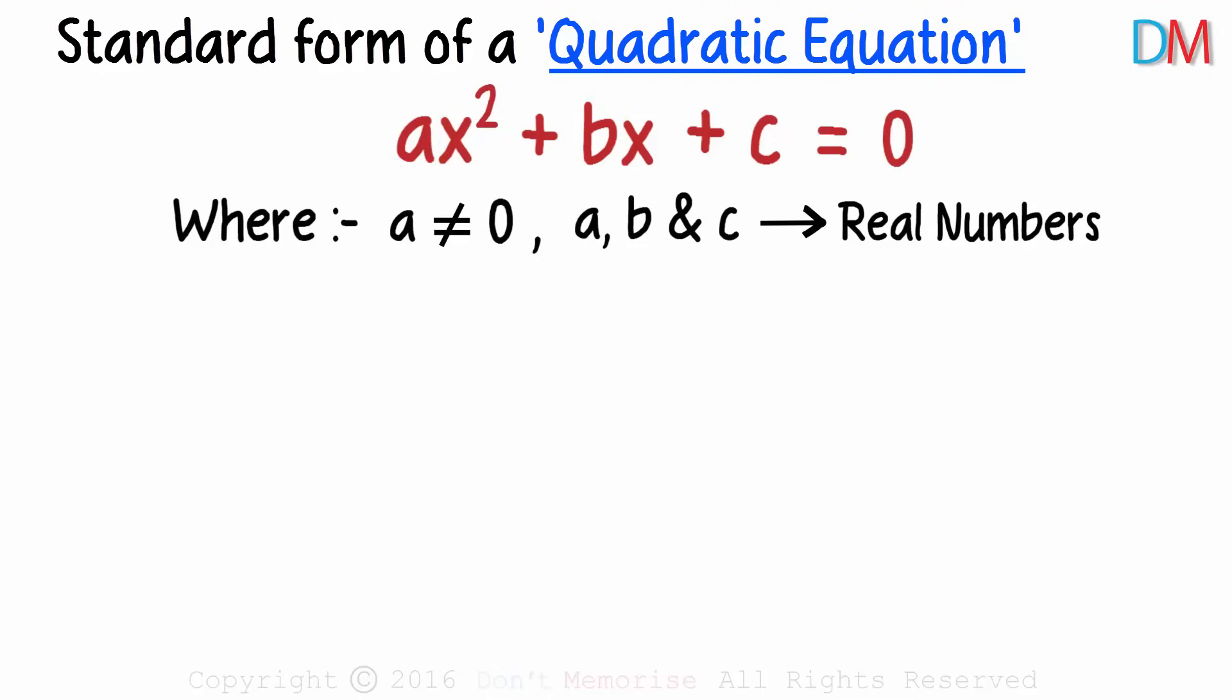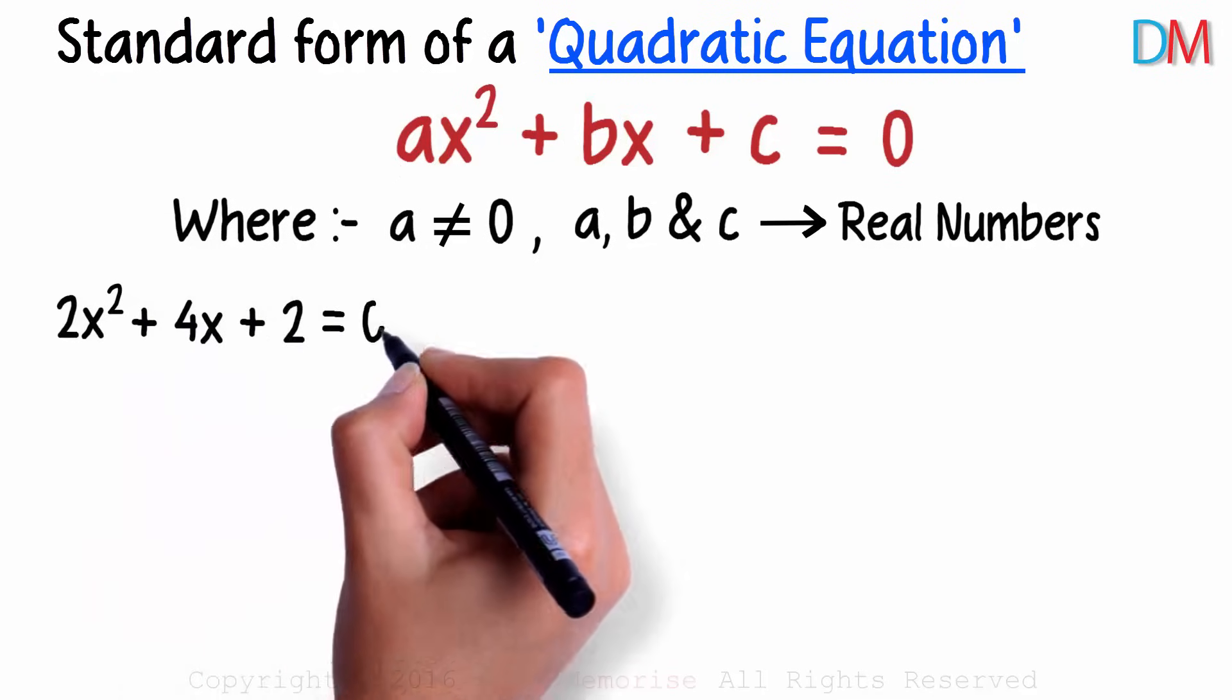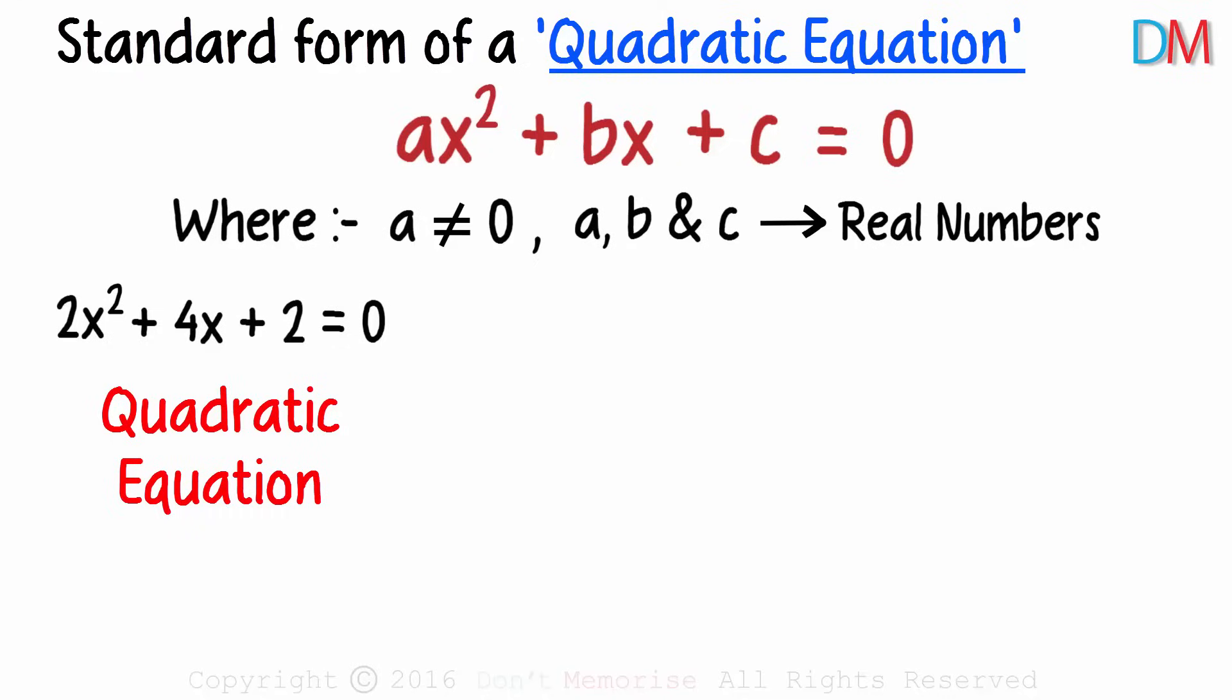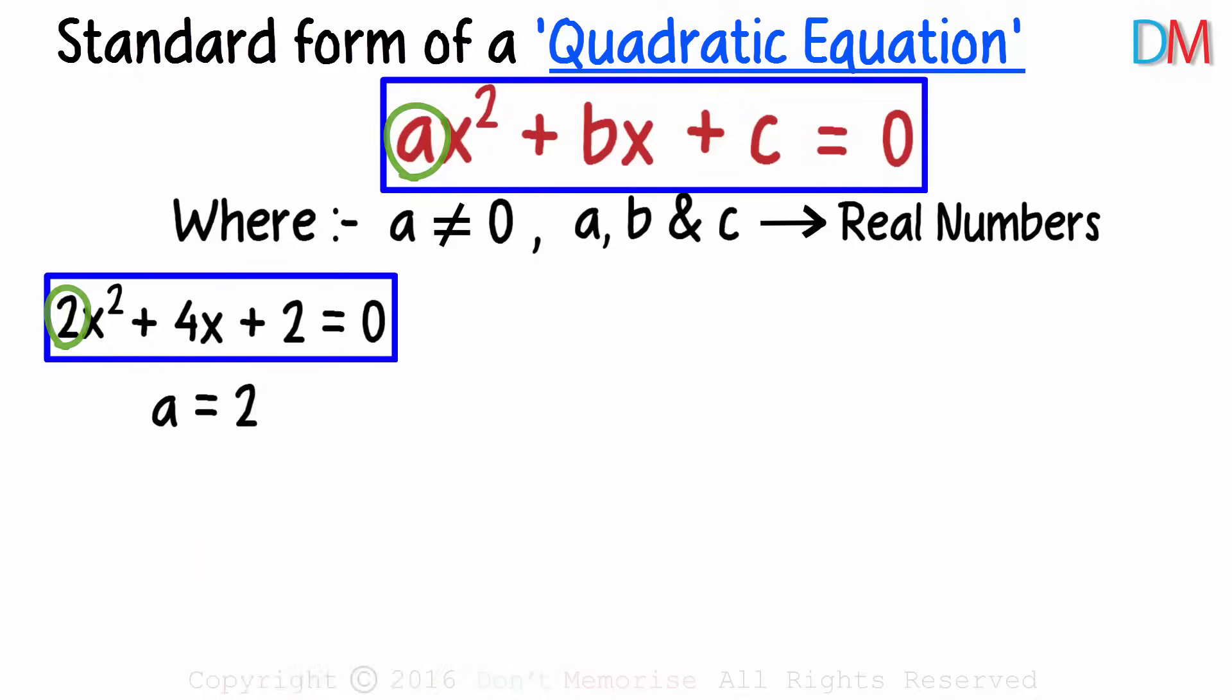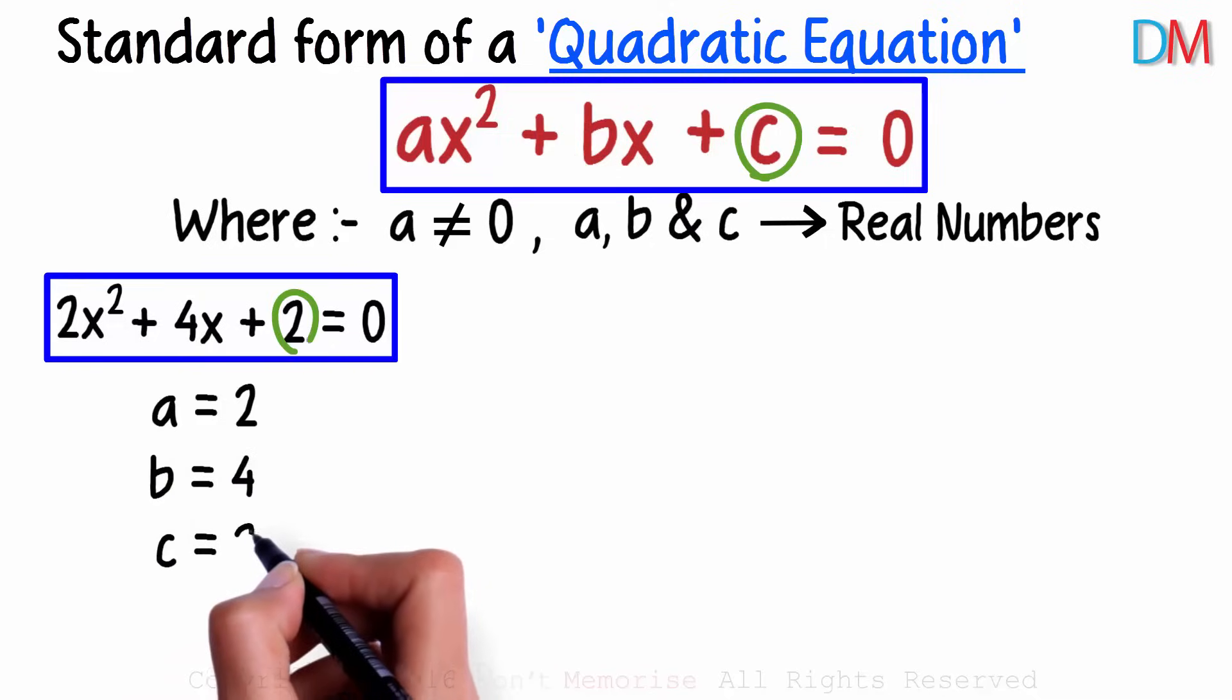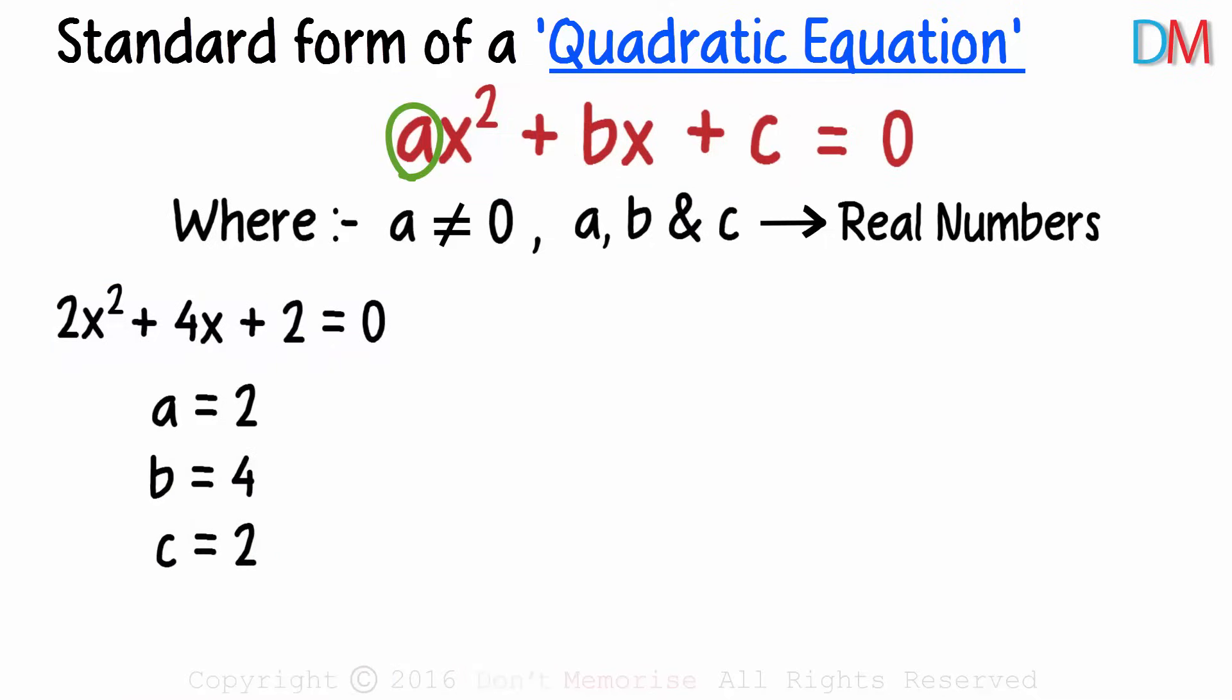For instance, 2x squared plus 4x plus 2 equals zero is a quadratic equation. Comparing it to the standard form, we get a as 2, b as 4, and c as 2. a is the coefficient of x squared, b is the coefficient of x, and c is the constant.